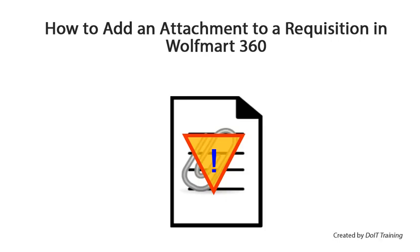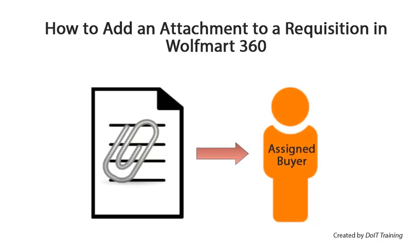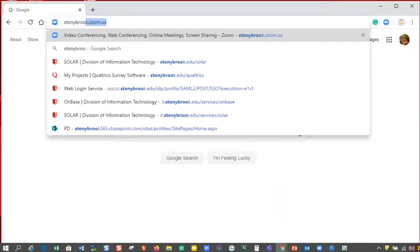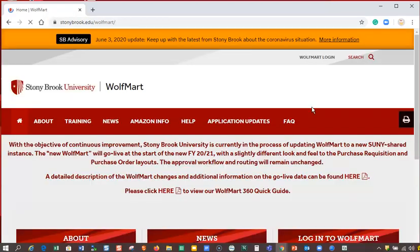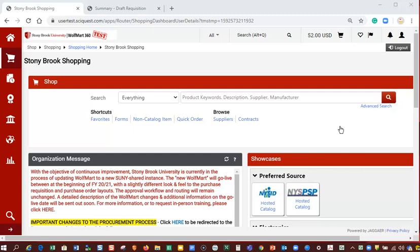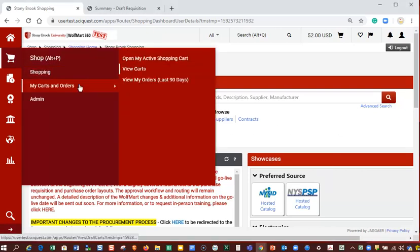Regardless of whether your attachment is internal or external, the steps will remain the same. Additionally, you can send attachments to the buyer by uploading them to a comment. Towards the end of this video, I will demonstrate adding an attachment to a comment. Login to Wolfmart using your NetID and password. This will bring you to the Wolfmart shopping page.